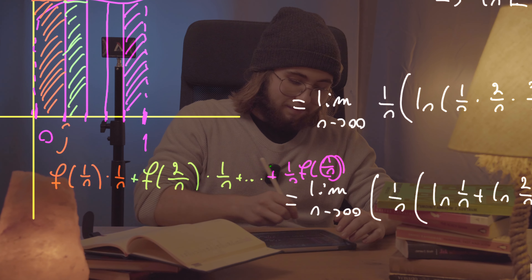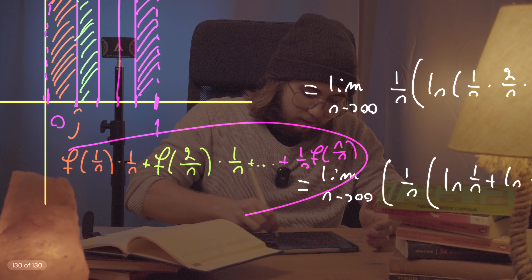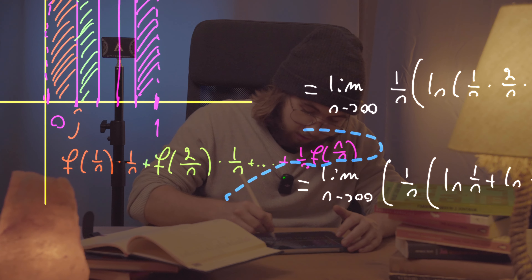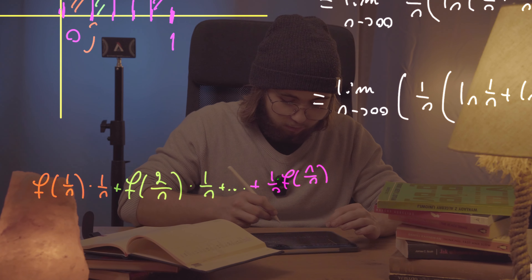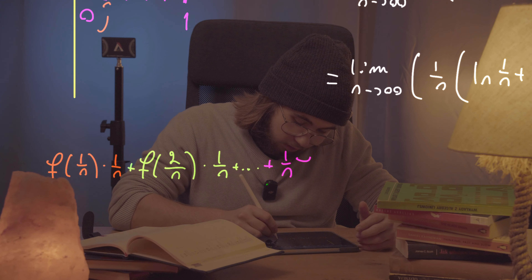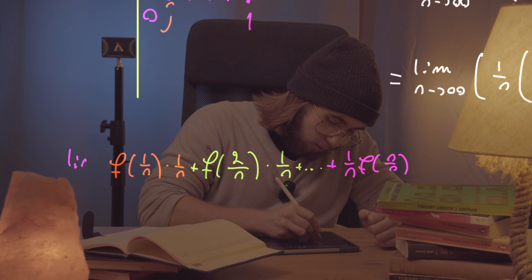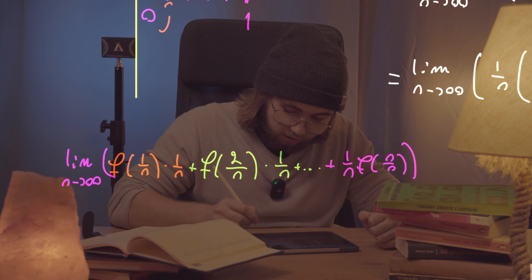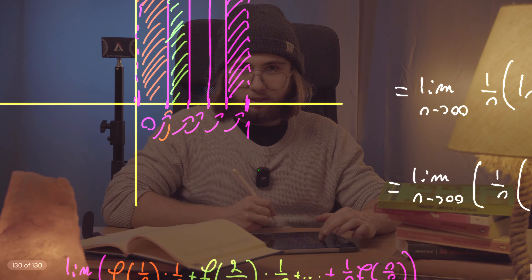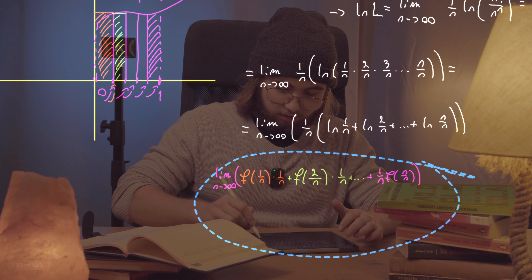Since n/n is just 1, that's the endpoint. For this to give the exact area — not just the Riemann sum approximation — I need to take the limit of all of this as n approaches infinity, getting infinitely many sub-intervals. And this looks pretty similar to what I have in my original limit problem.